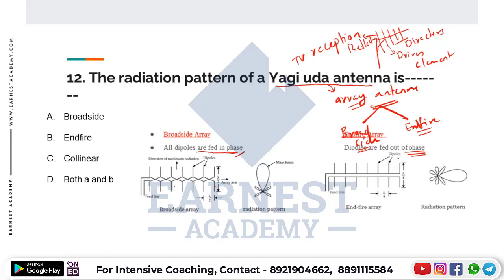In an end-fire array, dipoles are fed out of phase. The length of the dipole is lambda by 4 in end-fire, and the distance between two consecutive dipoles is also lambda by 4. The axis is parallel to the major lobe direction in end-fire.